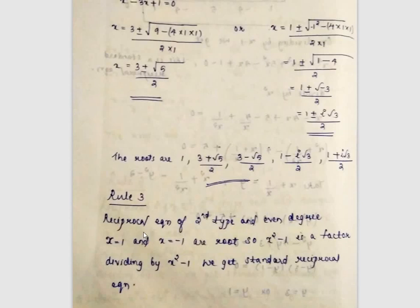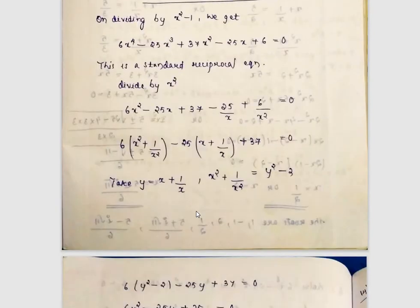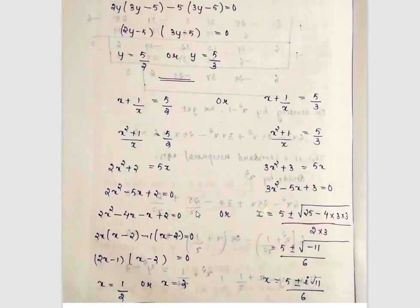For second type of even degree, both x = 1 and x = -1 are roots. That means (x² - 1) is a factor. Dividing the equation by (x² - 1) gives the standard reciprocal equation. For example, with coefficients 6, -6, -25, 25, 31, -32 (and similar), after division we get a standard equation with coefficients like 6, -25, 37 (adjusted). We then divide by x², set y = x + 1/x, and use x² + 1/x² = y² - 2 to substitute and solve for x.